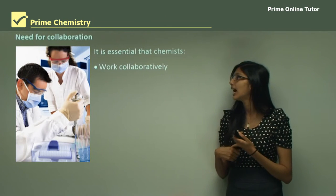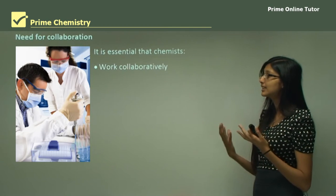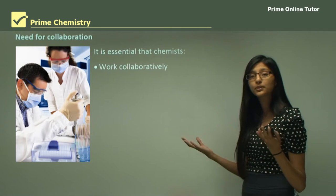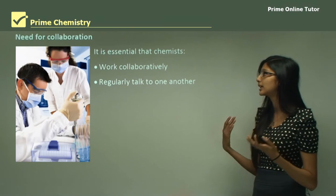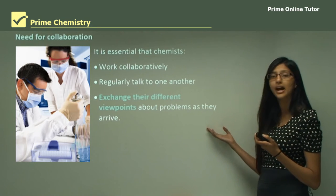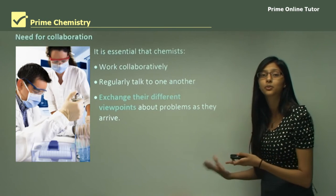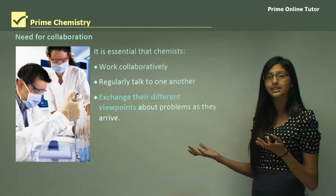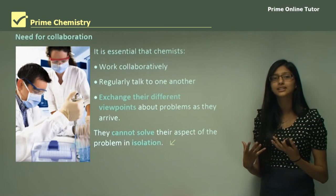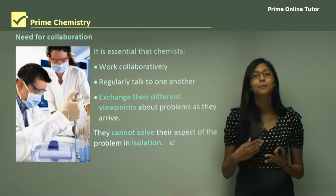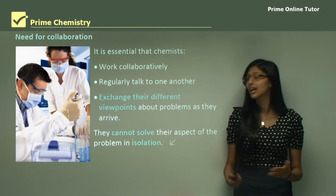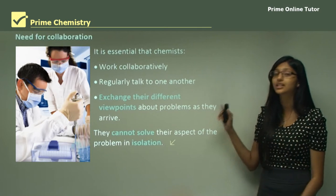It is essential that chemists work collaboratively because there are very different branches of chemistry and it's not possible for one person to know all of them. Chemists need to regularly talk to one another to share ideas and knowledge, and exchange viewpoints about problems as they arise. An environmental chemist will know what problems are involved with waste, but an organic chemist will only know the reactants — not how the waste impacts the environment. A chemist cannot work in isolation; collaboration is very important.